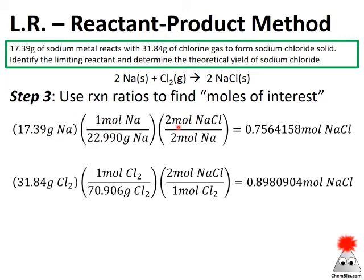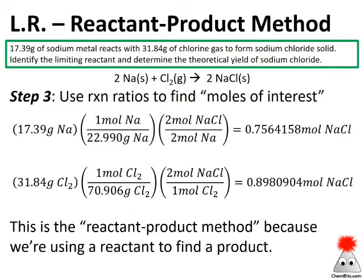Step three: use reaction ratios to find moles of interest. Use the ratios in the balanced chemical equation for both reactants. For sodium: convert to moles and use the relationship that 2 moles of sodium give 2 moles of sodium chloride, to find moles of NaCl. For chlorine: 2 moles of sodium chloride are formed from 1 mole of chlorine gas. That's the reactant-product method — using reactants to find products.